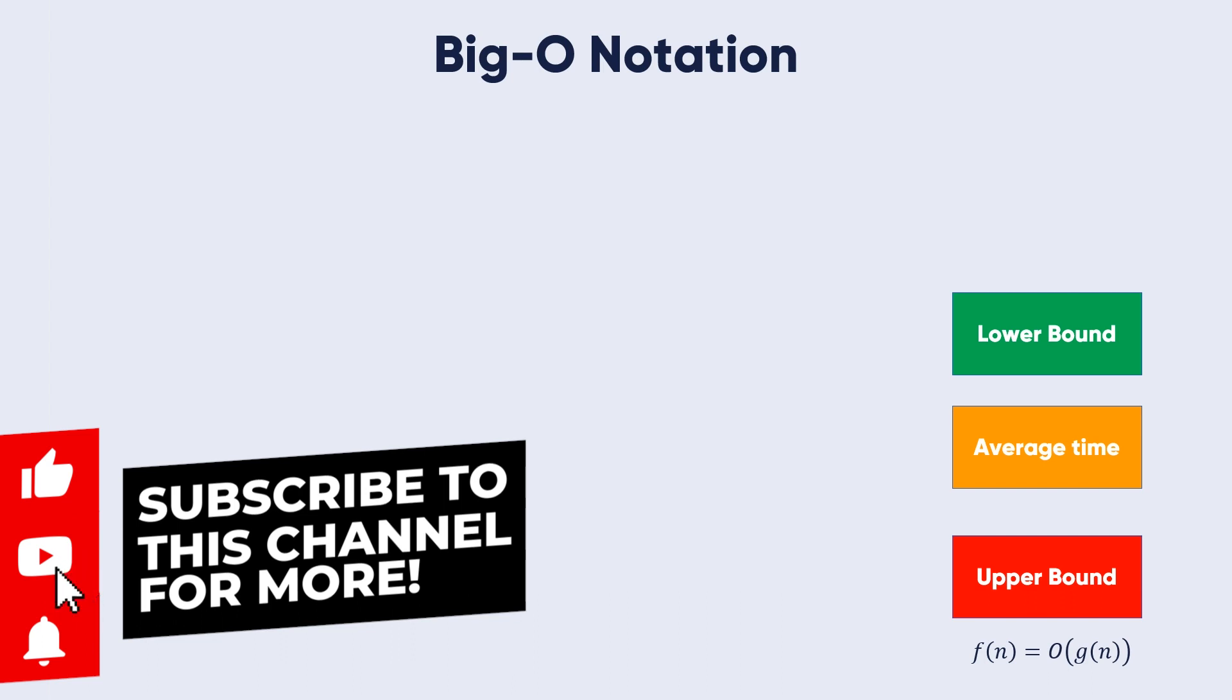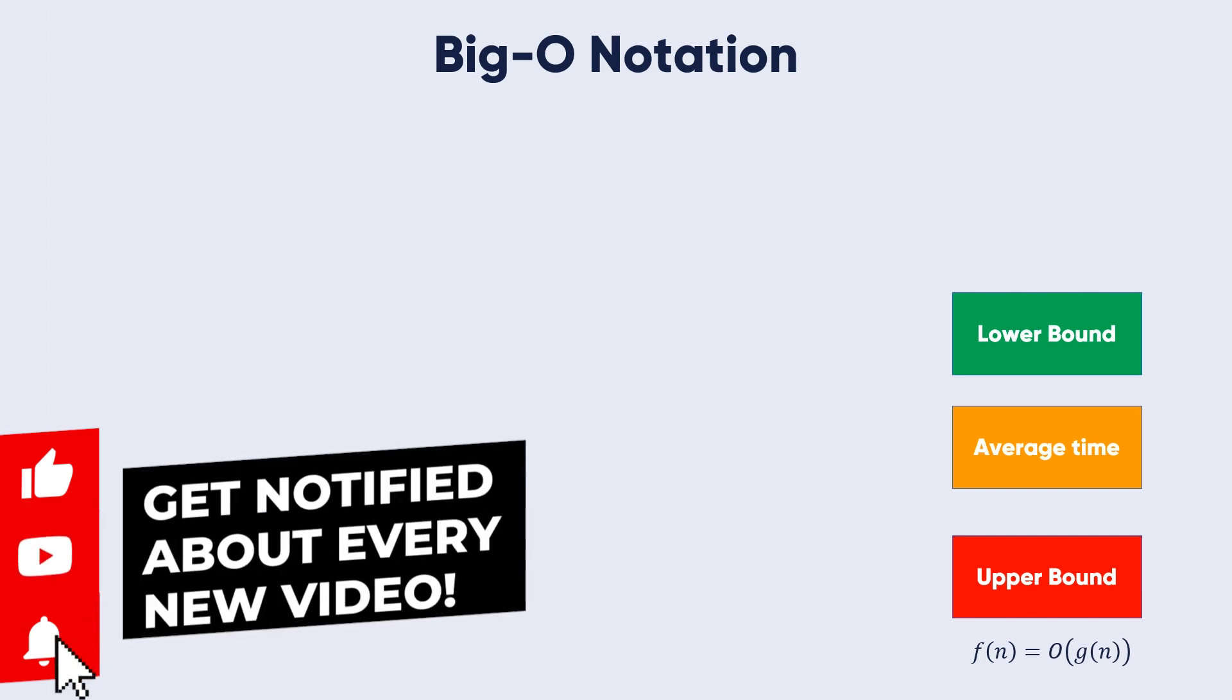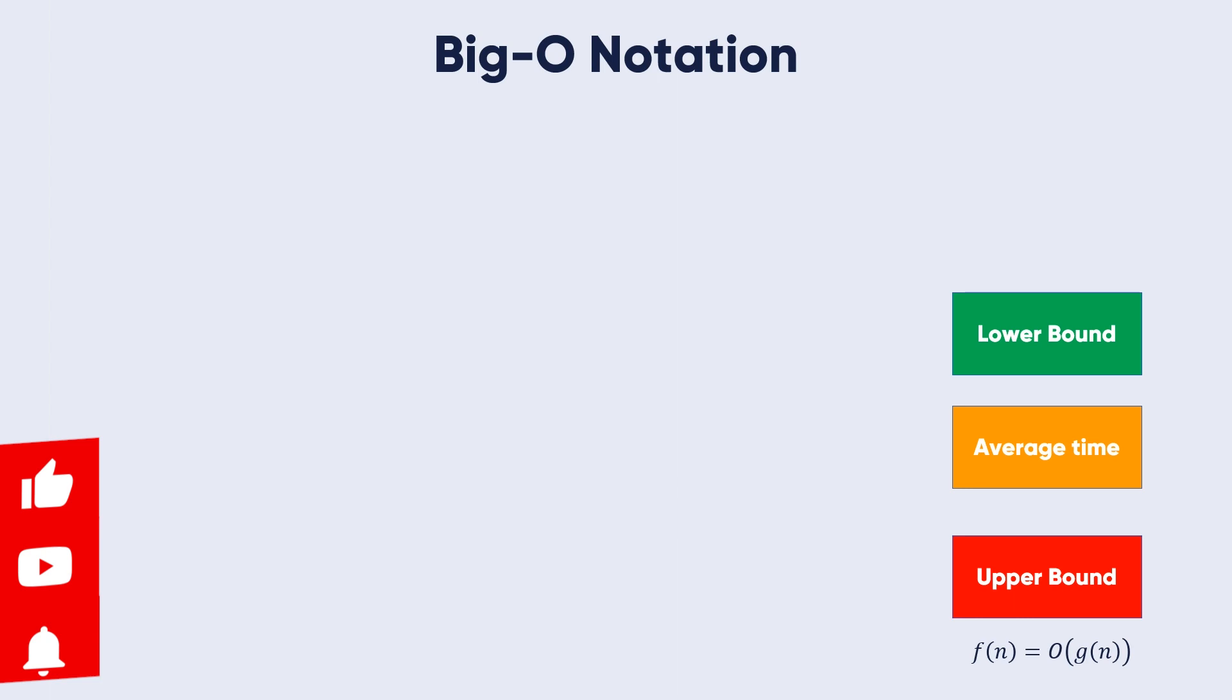A description of a function in terms of Big O notation usually only provides an upper bound on the growth rate of a function. So if we have a function, we have lower bound and upper bound.